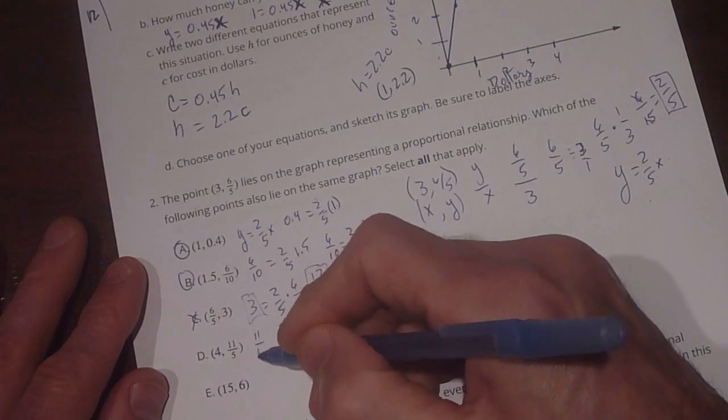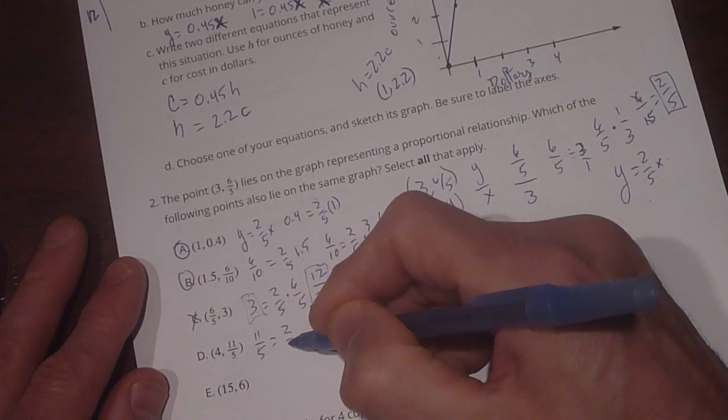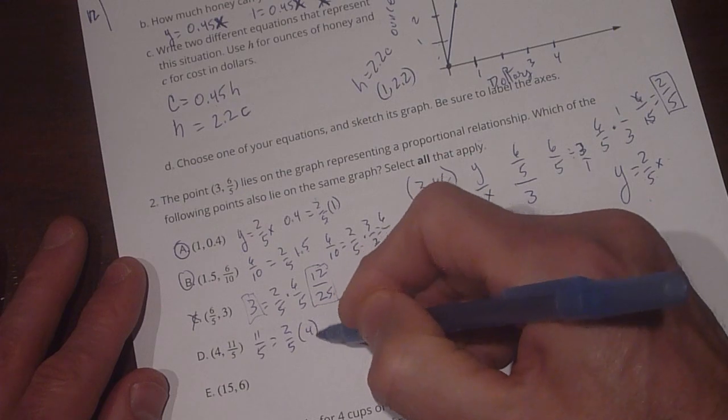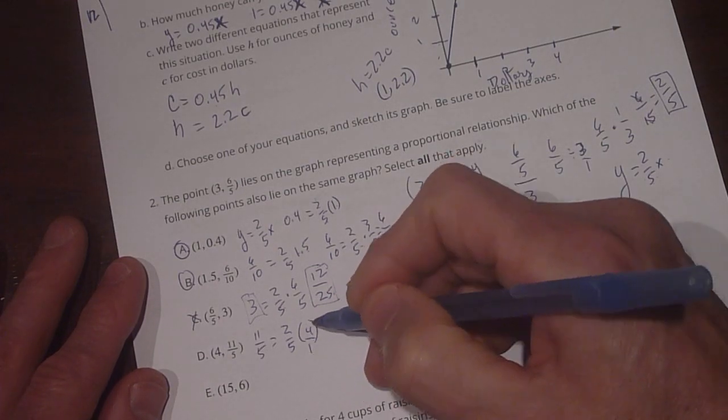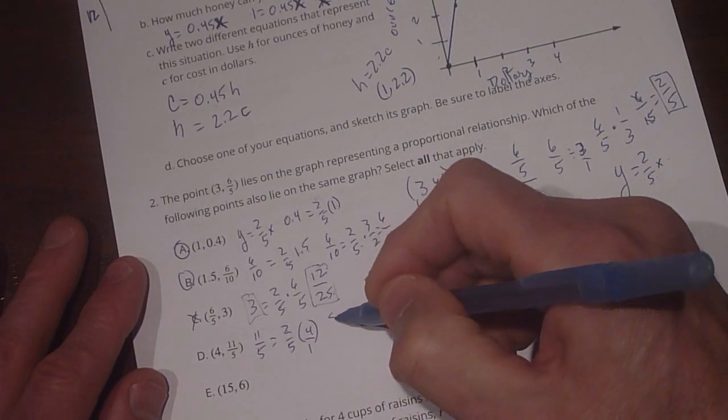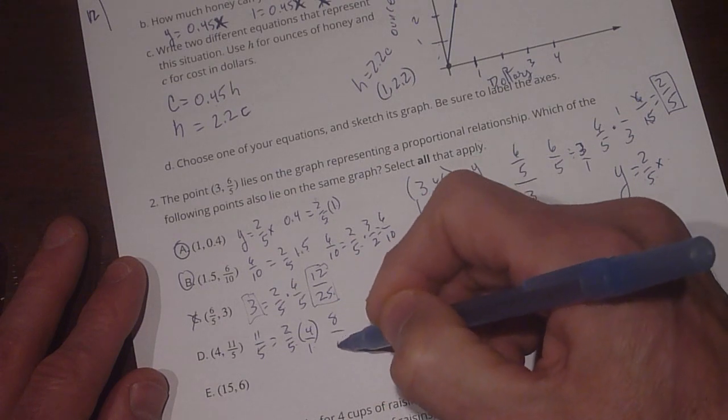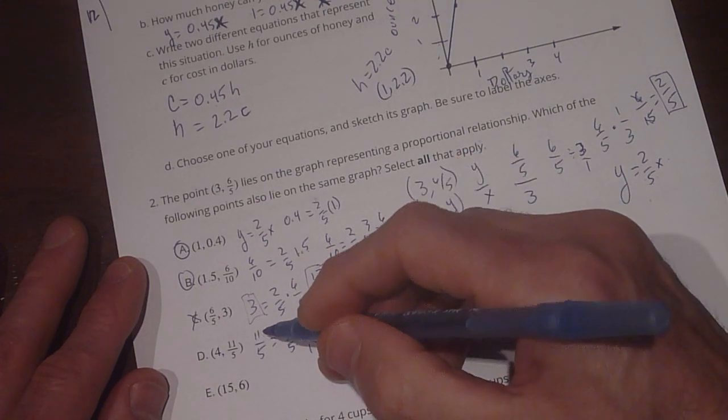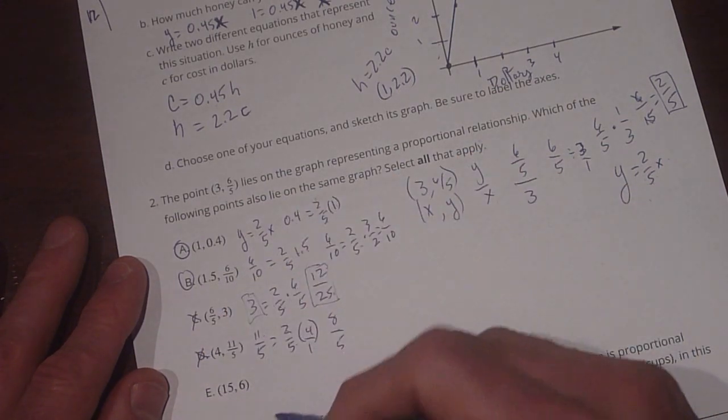Now 11 fifths equals 2 fifths times 4. Let's see if that works out. Again, this is 4 over 1, 2 times 4 is 8, 5 times 1 is 5. 8 fifths does not equal 11 fifths, so that's not true.